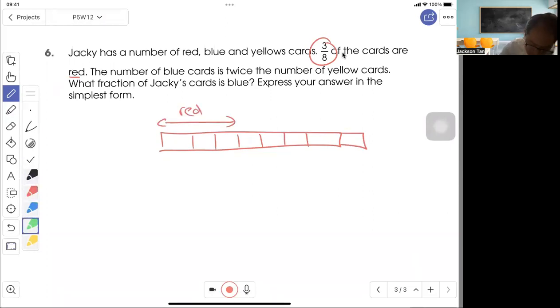Then the number of blue cards is twice the number of yellow cards. So here I have five units, but blue should be two units for every one unit of yellow. So what do I need to do?